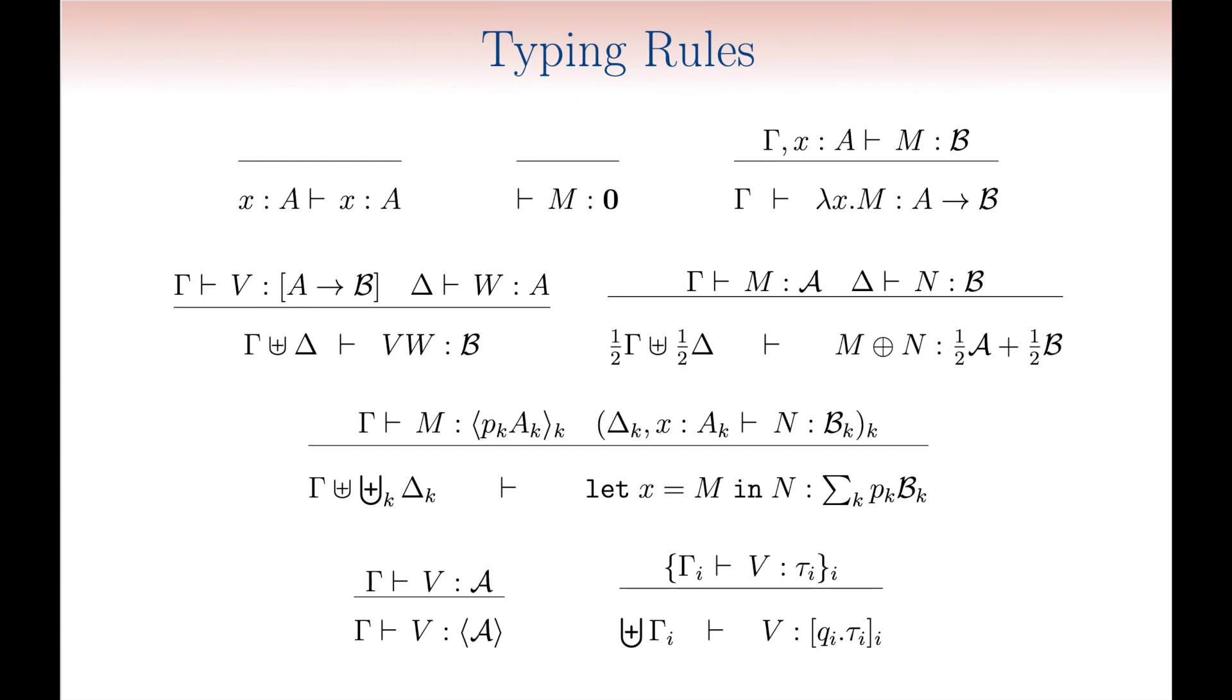Once the appropriate type structure has been identified, designing typing rules is relatively easy. Only a couple of rules deserve to be discussed further. First of all, the two branches of a binary probabilistic choice can come with completely different types, which are then mixed by a convex combination in the resulting type. Type environments are treated similarly.